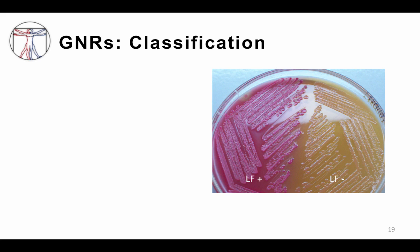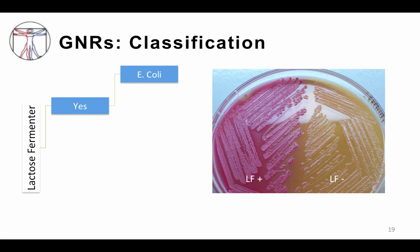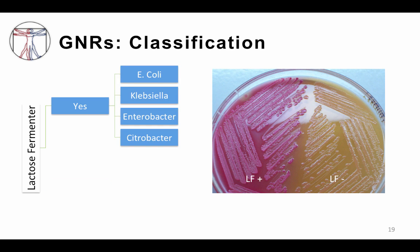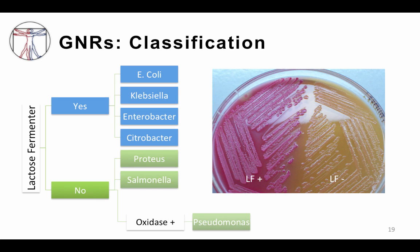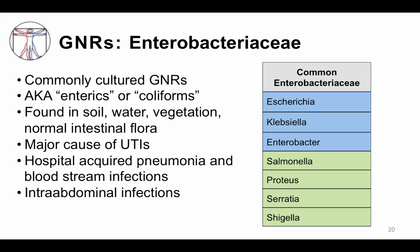One common way that microbiologists and infectious disease physicians think about gram-negative rods is whether they ferment lactose. This quick biochemical test, in addition to the gram stain, can give us a lot of information about a particular gram-negative rod. Lactose fermenters include E. coli, Klebsiella, Enterobacter, and Citrobacter. Non-lactose fermenters include Pseudomonas, which is oxidase positive, as well as Proteus, Salmonella, and Shigella — which are oxidase negative. Note that Pseudomonas is not the only oxidase-positive gram-negative rod, but it is probably the most clinically important one to know. Lactose fermenters are shown in blue and non-lactose fermenters in green, and all bacteria on this table are from the family Enterobacteriaceae.